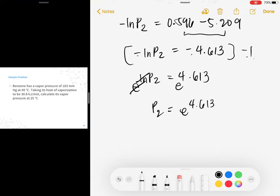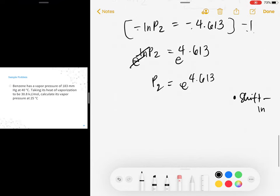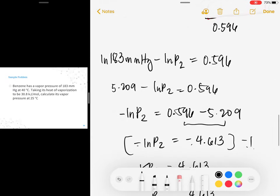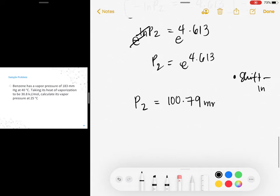It's easy, right? Just input this into the calculator. How do you press E on the calculator? Shift, then ln. Then input 4.613. P2 is now equal to 100.79. What's the unit? What was the unit of P1? The unit of P1 is millimeter mercury. So P2 is also millimeter mercury. If you round it off, this would be equal to 101 millimeter mercury.